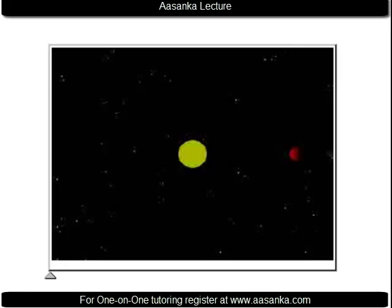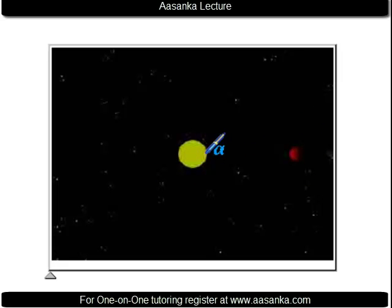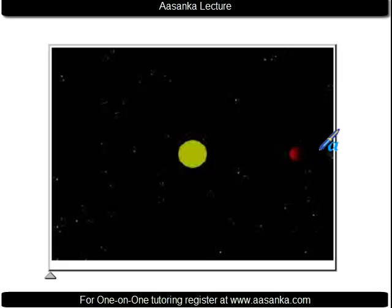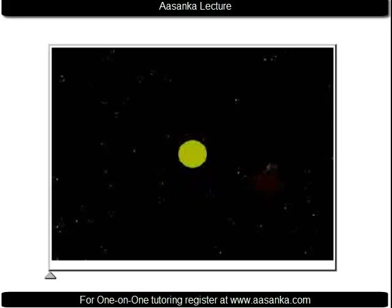To explain this concept of Eclipse, I'll show you a movie. Here is Sun, you see Earth and orbiting around Earth you see a Moon. Now many times you will see that Moon will come between Sun and Earth, and sometimes Earth will come between Moon and Sun. Let's closely monitor the movie now and see how the motion of Earth and Moon is happening around Sun.